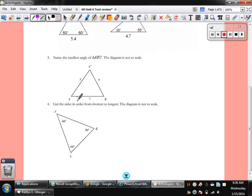Name the smallest angle of triangle ABC. The diagram is not drawn to scale. The smallest angle is across from the smallest side. The smallest side is 5. So, angle B.